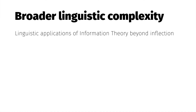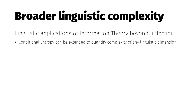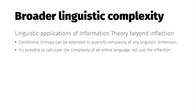Information-theoretic tools like conditional entropy are general enough to be applied to any linguistic dimension. Therefore, it's theoretically possible to calculate the complexity of an entire linguistic system — all of a language's grammatical subcomponents, not just inflectional rules. As far as I know, there hasn't been much progress in calculating whole-language complexity for any given language, and doing so would be quite a monumental task.